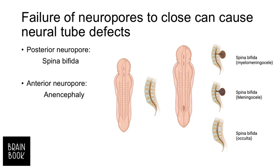There are some defects where failure of the neuropores to close can cause neural tube defects, named NTDs. If the posterior neuropore does not close, we face a deficiency called spina bifida. If the anterior neuropore does not close, we face anencephaly. Here you can see that when the posterior neuropore is perfectly closed, we have a normal spinal cord with no problem for the embryo.